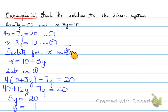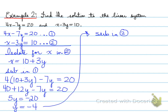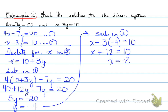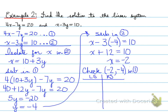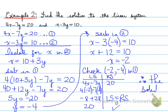We've completed step 2. Step 1 was isolate, step 2 was sub, step 3 is sub again — this time we sub y equals negative 4 back into the original equation 2. Always use the originals. Substituting, we get x plus 12 equals 10, so x equals negative 2. Finally, we check negative 2 and negative 4 in equation 1 using a left side, right side t-table. Left side is 4x minus 7y, right side is 20. We get left side equals right side. The solution is (negative 2, negative 4).